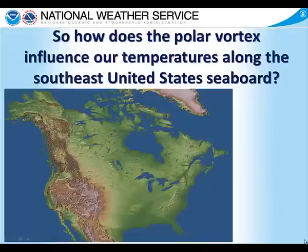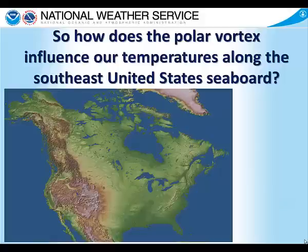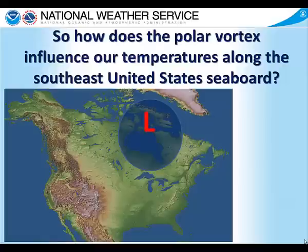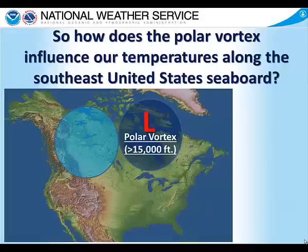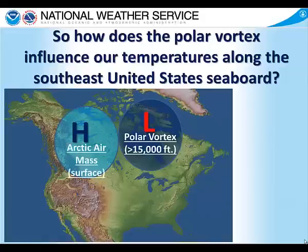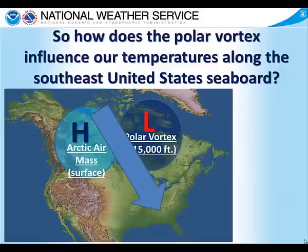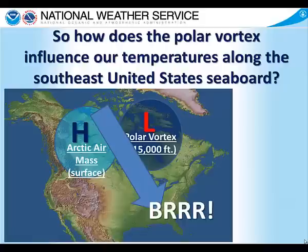So how does the polar vortex influence our temperatures along the southeastern United States seaboard? During the month of January it can have a really big influence. If the polar vortex is farther south than usual and located over eastern Canada instead of over the poles, remember that the polar vortex is an area of low pressure in the middle and upper portions of our atmosphere — we're talking 15,000 feet or above. The cyclonic flow at jet stream level will drive air from northern and central Canada down into the southeastern United States. In January, that air can be very cold because the source region is western Canada, home to arctic air masses, and that change in jet stream will drive those arctic air masses all the way down into the Gulf and Southeast — and that means cold weather for us.